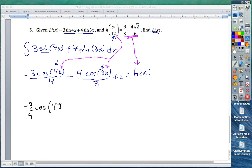Okay, so 4 times π over 12. 4 over 12 is π over 3. Okay. Minus 4 thirds cosine 3 times π over 12 is π over 4. And then, that equals, sorry, plus c, equals 3 over 8 minus 4 root 2 over 6.